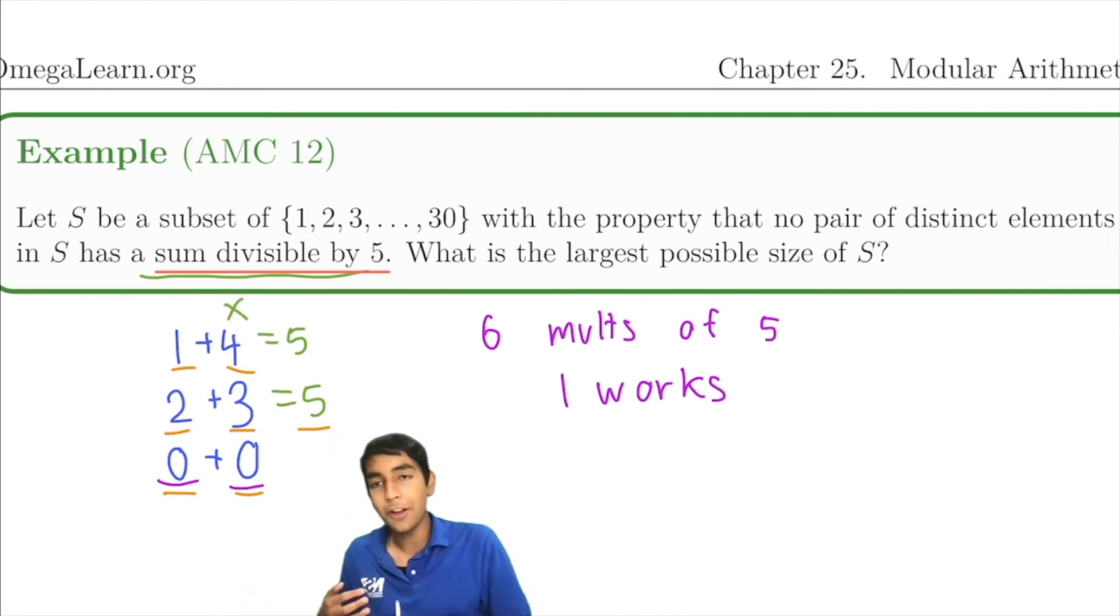And how many numbers are 1 mod 5 from 1 to 30? You can think about dividing 1 through 30 into 6 groups. 1, 2, 3, 4, 5, 6, 7, ... 10, so on, all the way till 26, 27, 28, 29, 30.